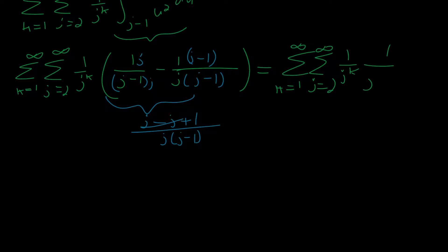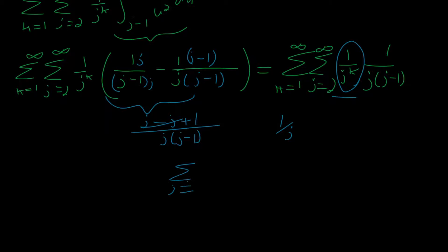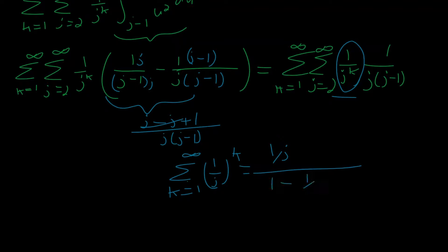What we have then is 1 over j(j minus 1). To evaluate the sum involving k, we apply our geometric series formula. Since j is always 2 or more, 1 over j is always less than 1, so the formula applies. The sum from k equals 1 to infinity of (1/j)^k equals (1/j) over (1 minus 1/j), which simplifies to 1 over (j minus 1). So our double sum is reduced to a single sum.